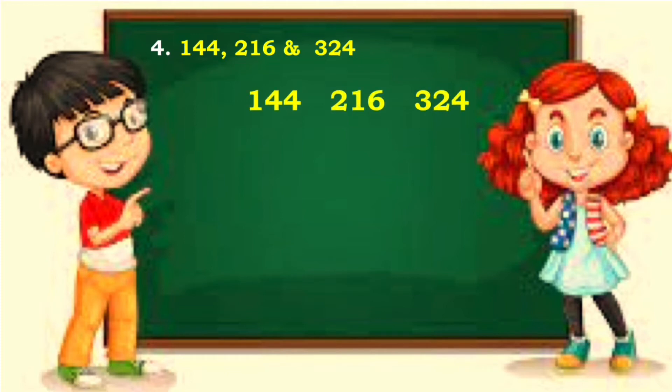Observe. Find the LCM of 144, 216 and 324. If you add the digits of each number, the answer is 9. So all numbers are divisible by 9.